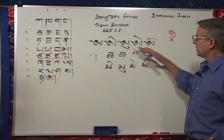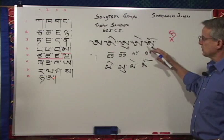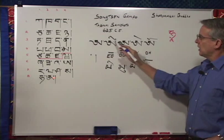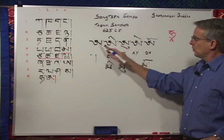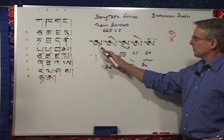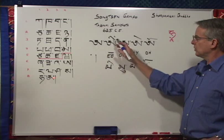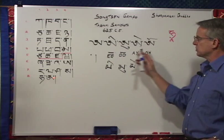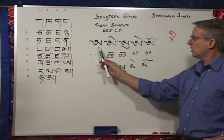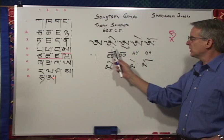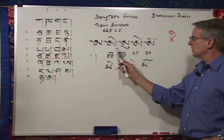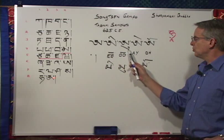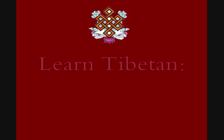So these are the five vowels — the inherent ah with each of the four vowel signs: ah, ee, oo, ae, and o.